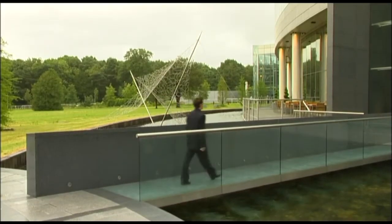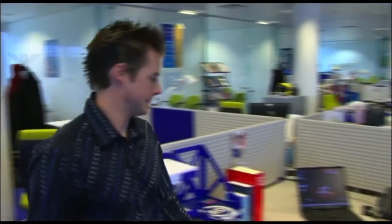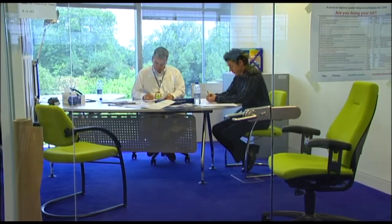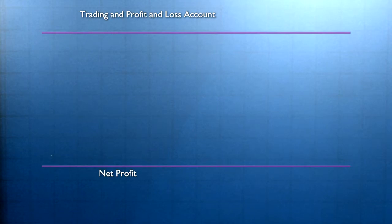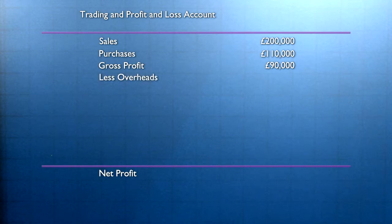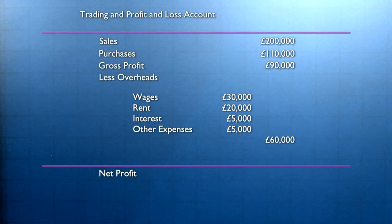Imagine you are working for a firm and currently earning £30,000 a year. You decide to give up your job and start your own business. At the end of the first year, you prepare a set of accounts. You have sales of £200,000. After subtracting purchases, you have a gross profit of £90,000. But that's still not your final profit — you also subtract wages, rent, interest, and so on, leaving you with a net profit of £30,000.